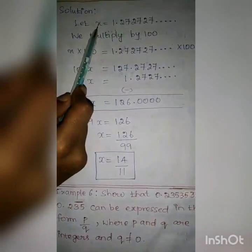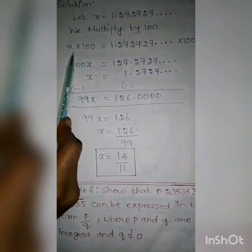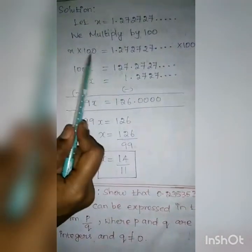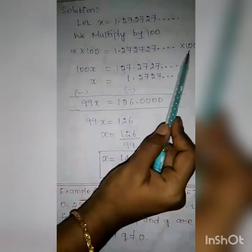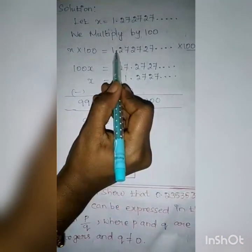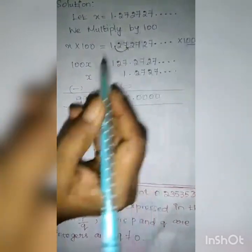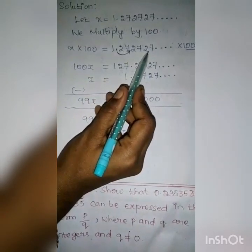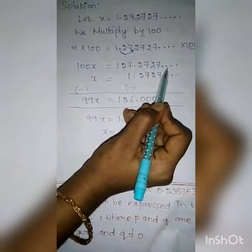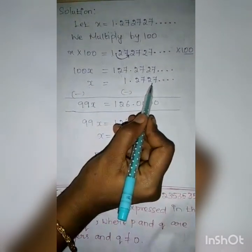We multiply the LHS and RHS by 100. So X into 100 equals 1.272727 into 100. There are two zeros, so the point moves from left to right by two places. So 1.272727 can be written as 127.2727 etc. Then, we have to write the X value: X equal to 1.2727 etc.